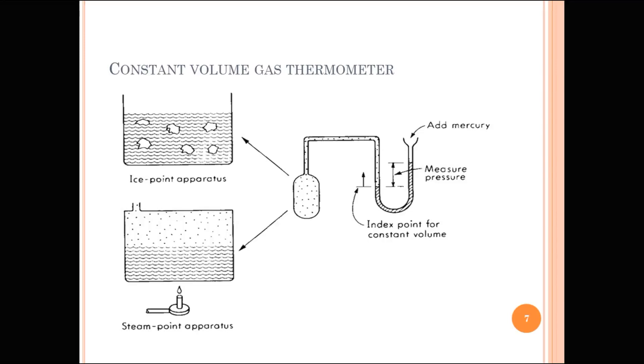Moreover, it is not physically realizable since it depends on an ideal Carnot cycle. A temperature scale defined by a constant volume or constant pressure gas thermometer using an ideal gas is identical to the thermodynamic scale.